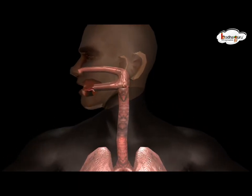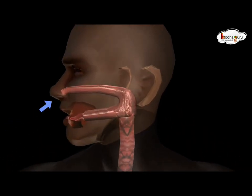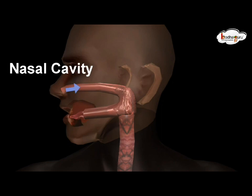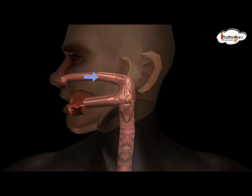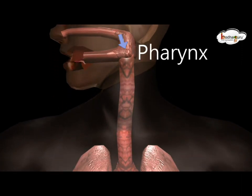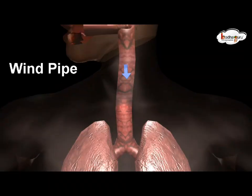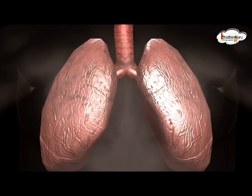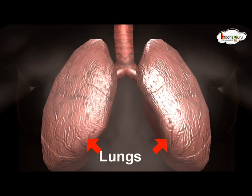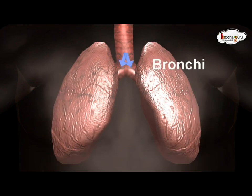Remember how oxygen reaches the lungs? We breathe through our nose, so the air enters through the nostril, then it goes to the nasal cavity. Then it passes through the pharynx. After the pharynx, it has two parts — esophagus and larynx. The air goes into the larynx, then goes into the bronchus. The bronchus is divided into bronchioles.